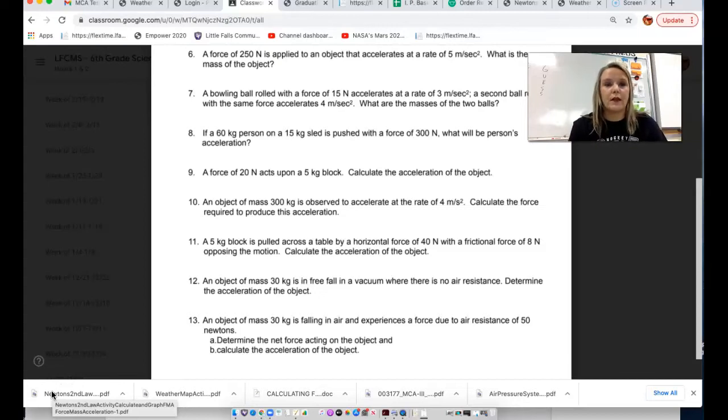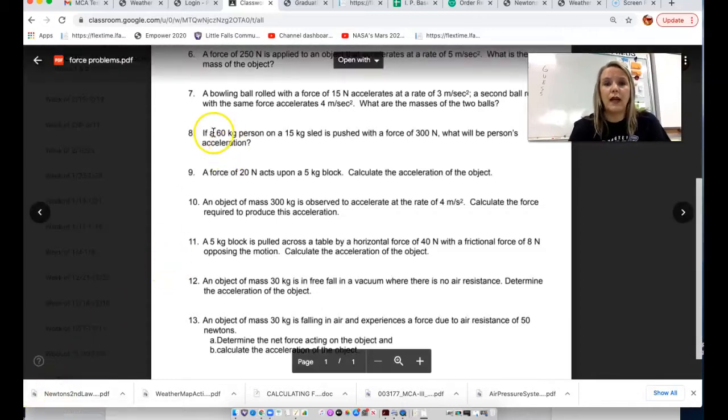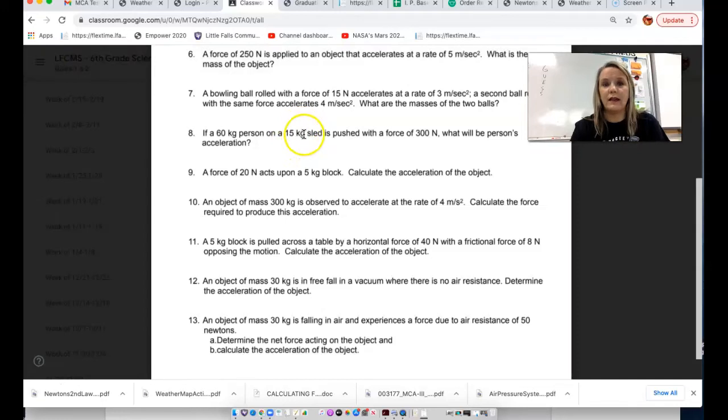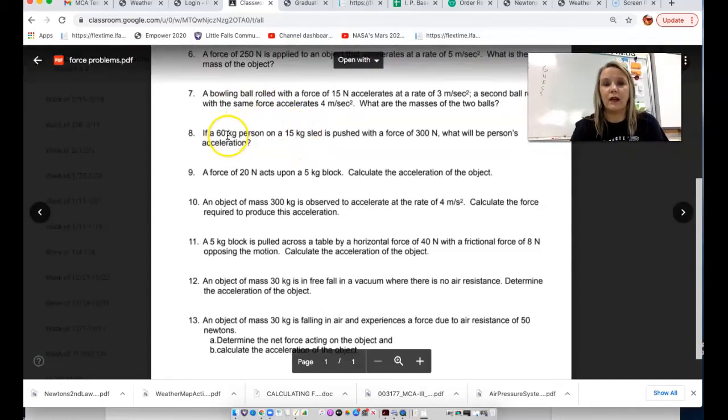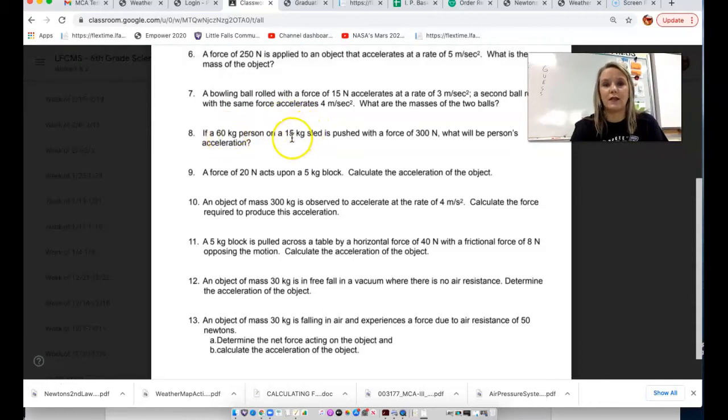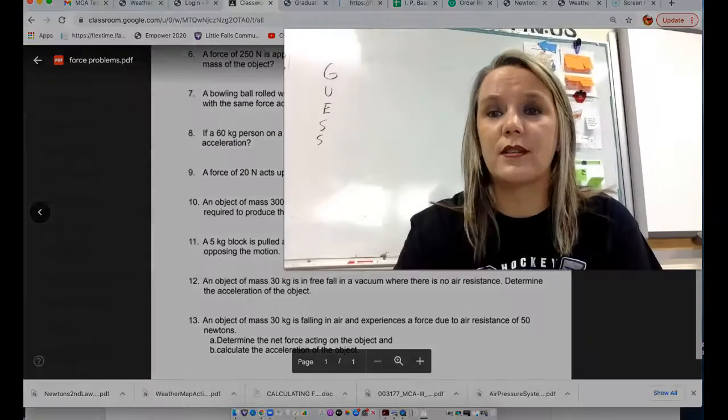We'll start with number 8. Number 8 says, if a 60-kilogram person on a 15-kilogram sled is pushed with a force of 300 newtons, what will that person's acceleration be? First off, we need to add the 15-kilogram sled to the mass of the person. So mass, in this case, is going to be 60 plus 15, or 75 kilograms. That's what m will equal, and then we know what the force is. It says 300 newtons, and our unknown is acceleration.